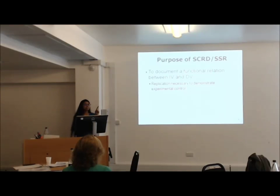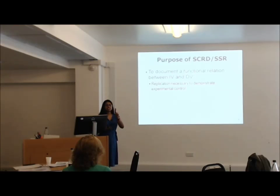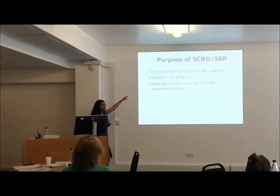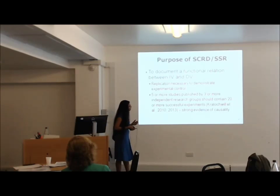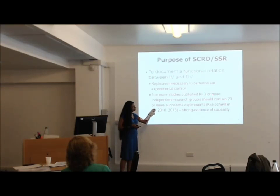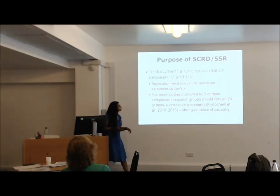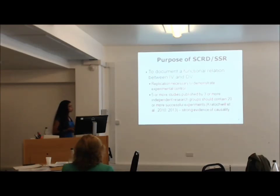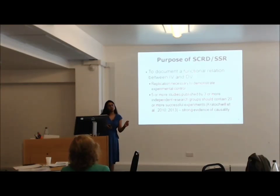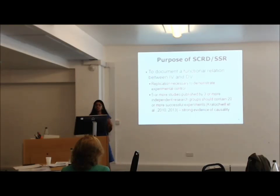We are considering only one person here, so how do you show causality with just one person? We want to use replication as a necessary tool for demonstrating experimental control. One standard that asks for strong evidence of causality is that the intervention must have been used in five or more studies published by three or more independent research groups containing 20 or more successful experiments — combining results across individuals, studies, and different trials.